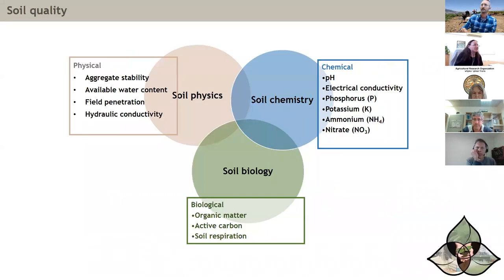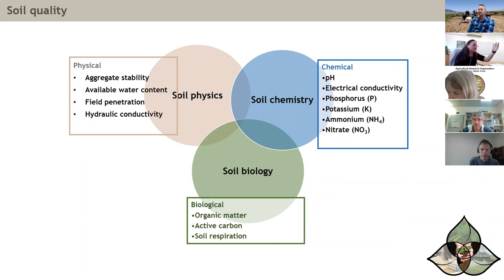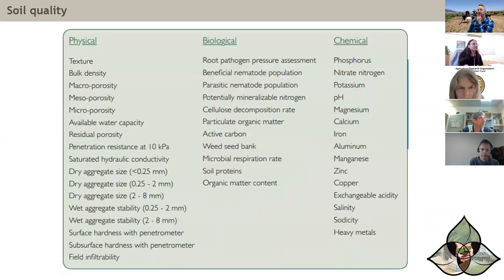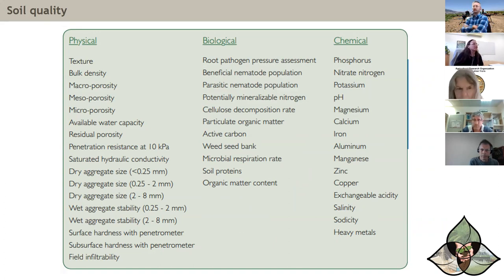As an example for the Cornell Soil Health Test: we select several indicators — aggregate stability, available water content, and biological, physical, and chemical properties. The overall integration of all of them gives the soil health index. This is based on previous work where more than 300 different soil indicators were examined, and relevant properties were selected using expert knowledge and statistical modeling for evaluating agricultural soil management.